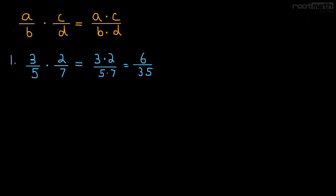Let's do another example. How about negative 5 over 8 times 9 over 11? Well, this is just negative 5 times 9 over 8 times 11. And negative 5 times 9 is negative 45, and 8 times 11 is 88.